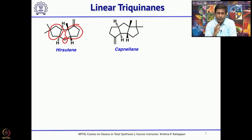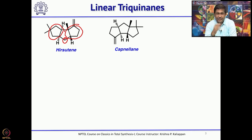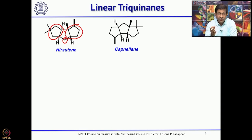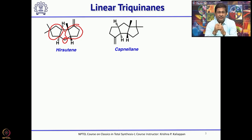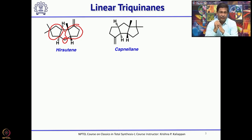The remaining 4 carbon atoms — because these are sesquiterpenes — are distributed across these 11 carbon atoms. The way they are distributed, and the way you have oxygen functionalities, gives you several linear triquinines.